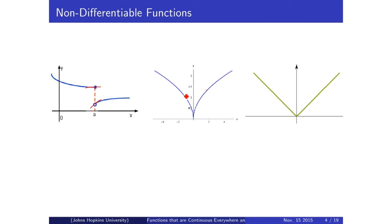Looking at the second function, if we draw the tangent lines right before and right after the point of non-differentiability, it looks like they're going toward the same line — just a vertical line. However, as it turns out, one of the lines will have a positive slope while the other will have a negative slope. So if you take the difference between them, the difference between the slopes right before and right after that point will come out to be a positive value. Therefore it does not pass the condition of differentiability, and therefore it is non-differentiable.